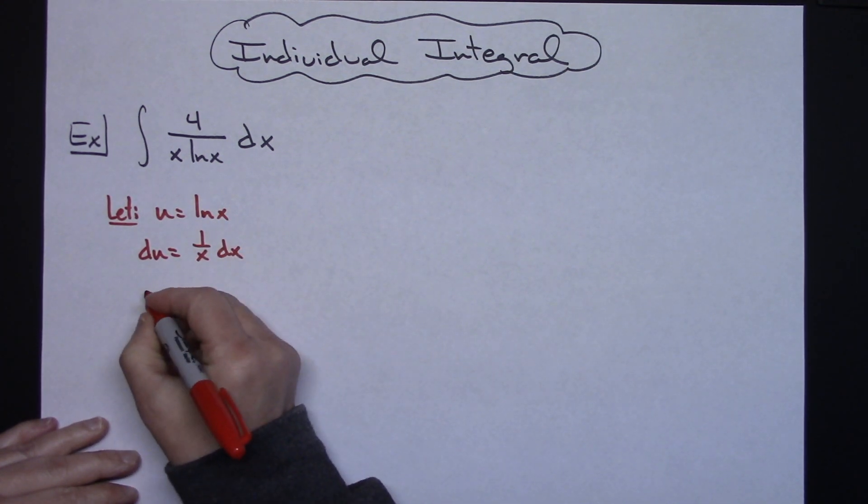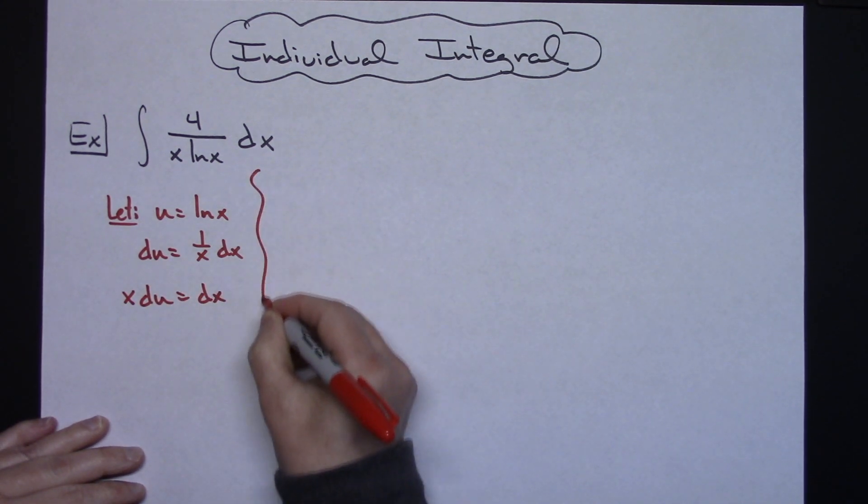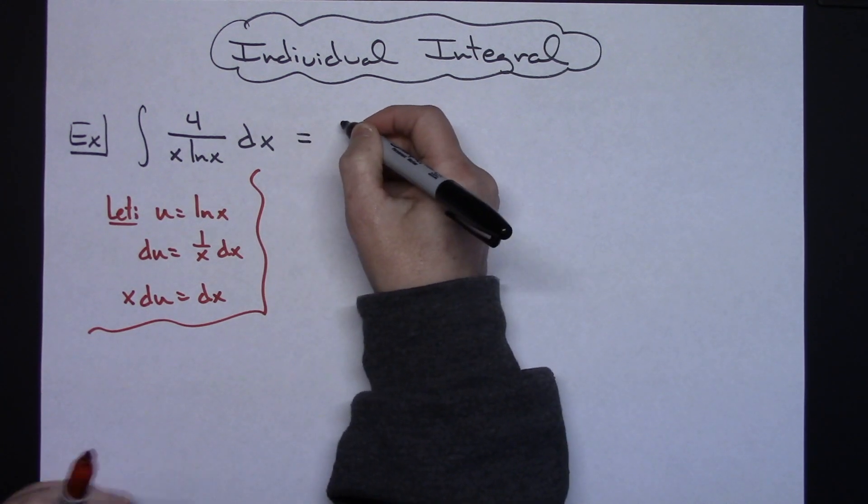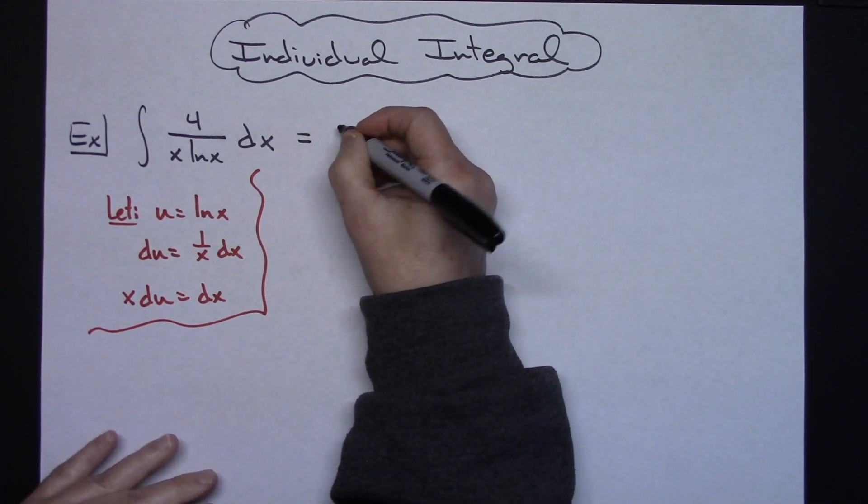I'm going to go ahead and solve for dx. So I'll have x du is equal to dx. At that point then I'm going to come back up here and in my original integral I'm going to do some substitutions.